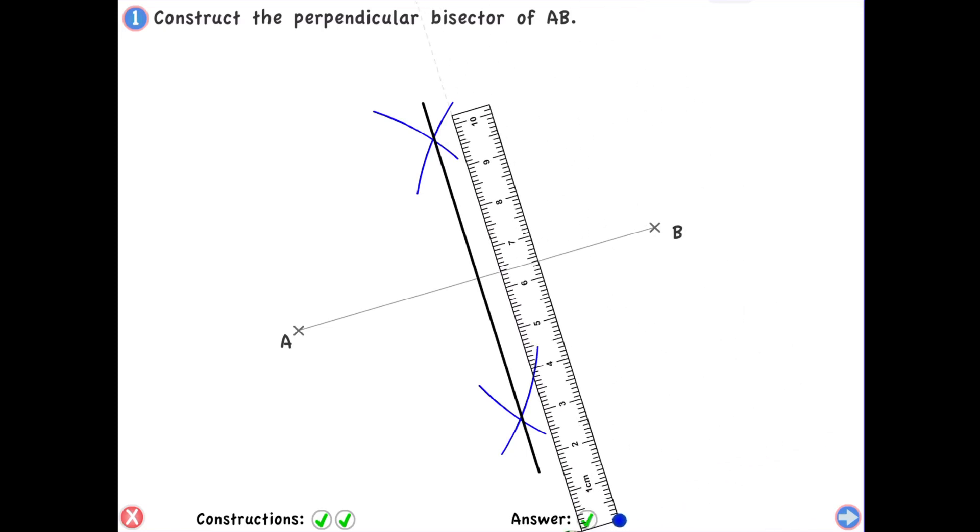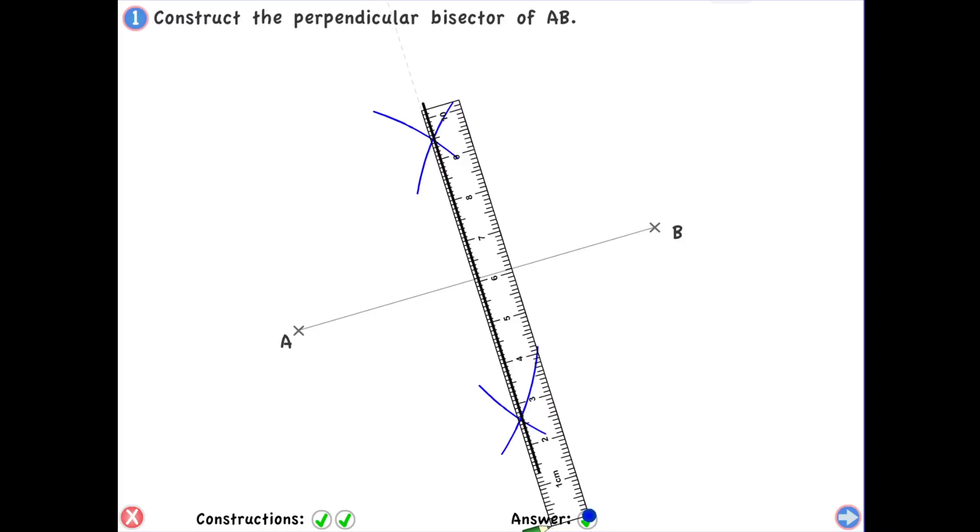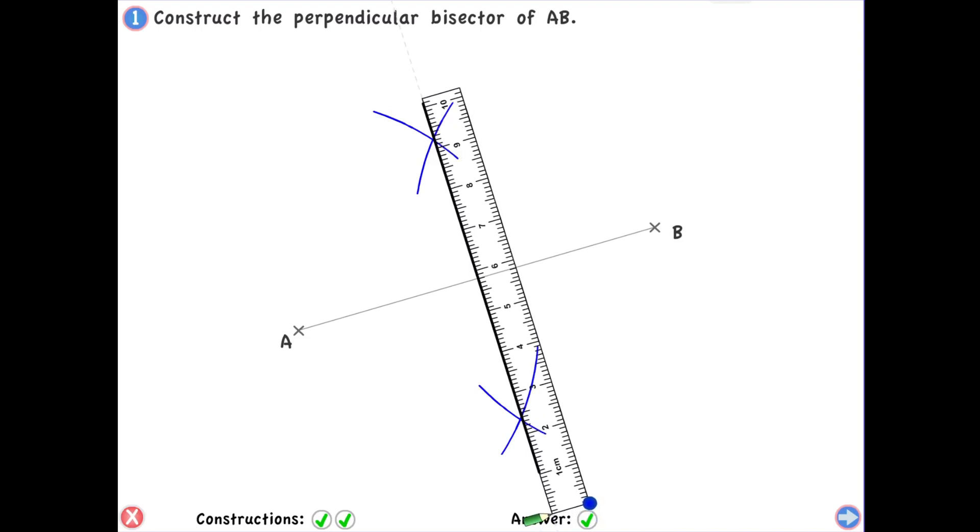One thing to keep in mind is that all the points lying on the perpendicular bisector are equidistant from A and B. That means I can pick any point on the line that I have just made, and all the points on this line, if we were to measure their distance from point A and point B, we will see that their distance is equal.